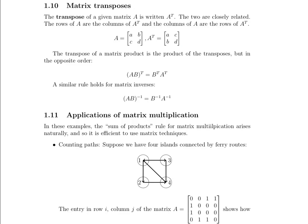One interesting property is that the transpose of a matrix product is the product of the transposes but in the opposite order. So if we took A times B and then took that product's transpose, that would be the same as if we swapped the order and took the transposes and then multiplied them: (AB)ᵀ equals Bᵀ times Aᵀ. A similar rule holds for matrix inverses: (AB)⁻¹ equals B⁻¹ times A⁻¹.